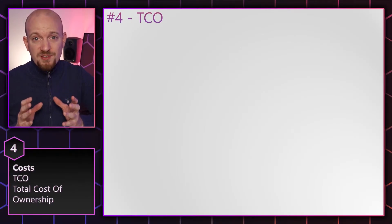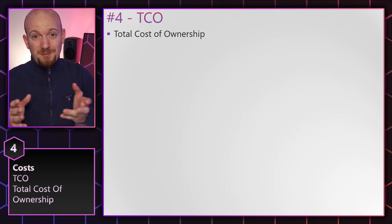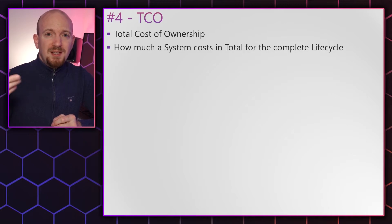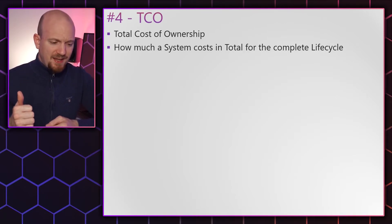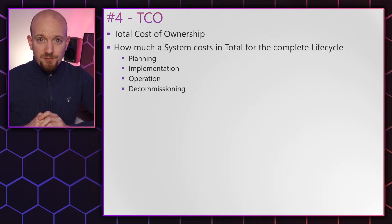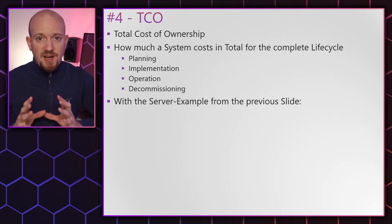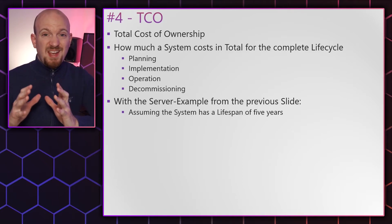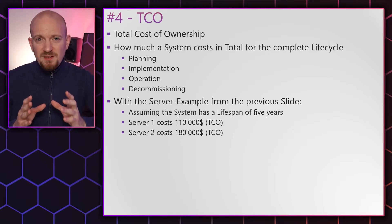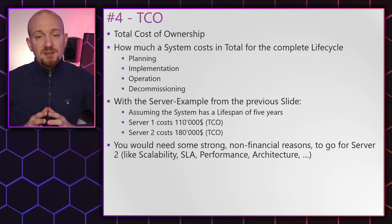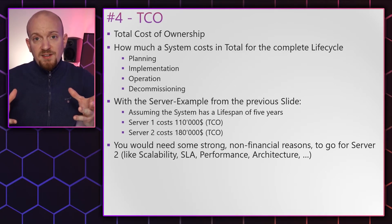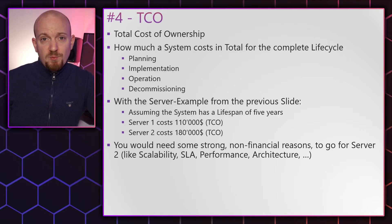The next term is TCO, which stands for Total Cost of Ownership — how much does the system cost in total for its complete life cycle, including planning, implementation, operation, and decommissioning. Using the server example with a five-year lifespan: server one has a TCO of $110,000 and server two a TCO of $180,000. In this example you'd need a strong non-financial argument to choose server two — such as scalability, a better SLA, improved performance, or a cleaner architecture.